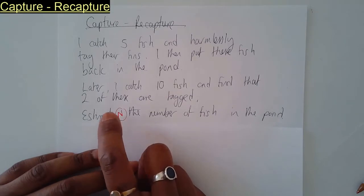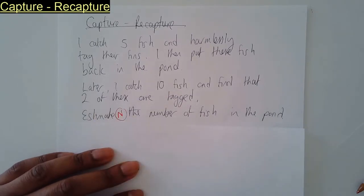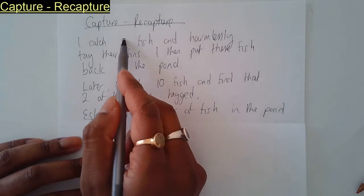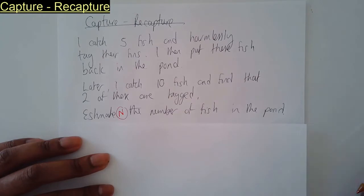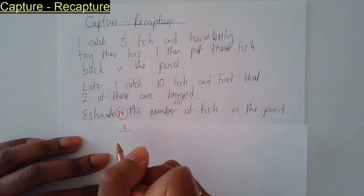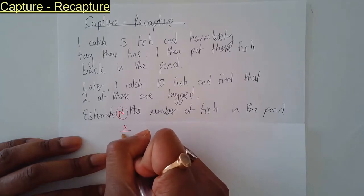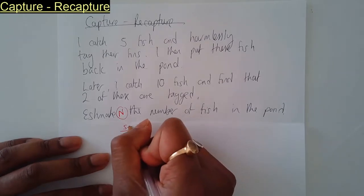I'm going to represent that estimate as N. That's the total number of fish in the pond. So the calculation: to begin with, first time around, I've caught five fish out of—well, I don't know how many fish there are in the pond—five out of so many fish in the pond. That's the first time. Remember, these five are tagged.